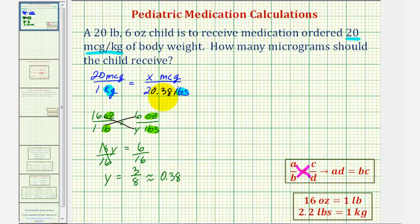So now we'll convert twenty point three eight pounds to kilograms using another proportion. The conversion we'll use is two point two pounds is approximately one kilogram. So this will give us our first ratio. Two point two pounds is to one kilogram as twenty point three eight pounds is to an unknown number of kilograms. We'll call it Z kilograms. We have the same units on top and on the bottom, so we can cross multiply and solve for the unknown.